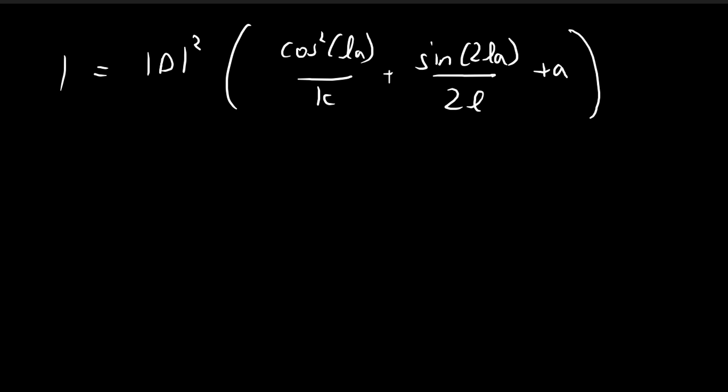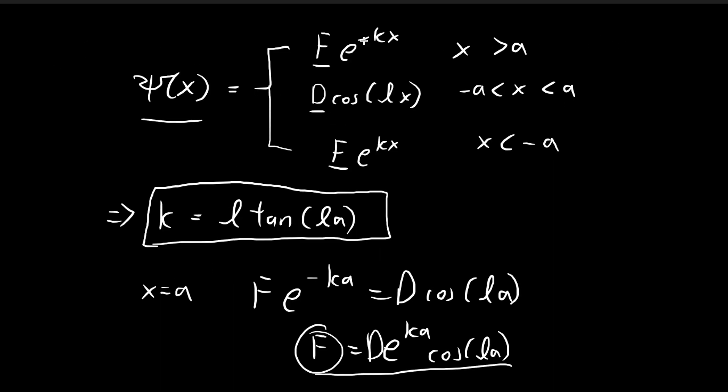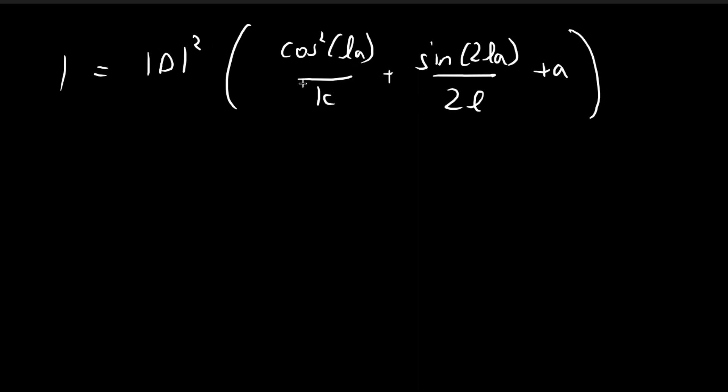So if we solve this equation, we get the allowed energy levels, and then we just plug those energy levels back into this expression. Then we can take the reciprocal, and we would have essentially found the constant d. So we can say that we're actually done.